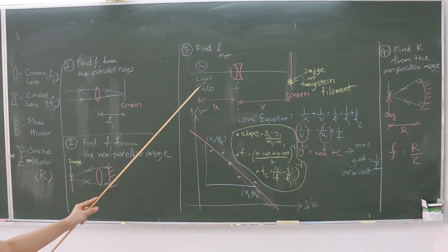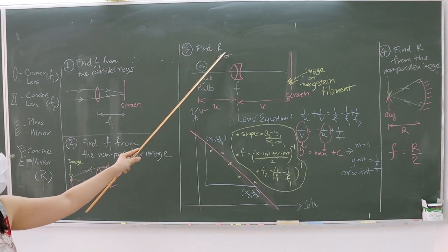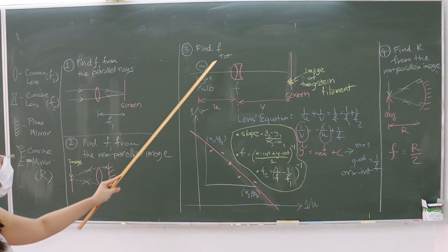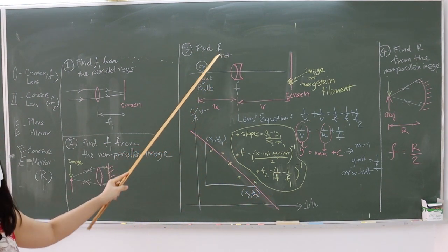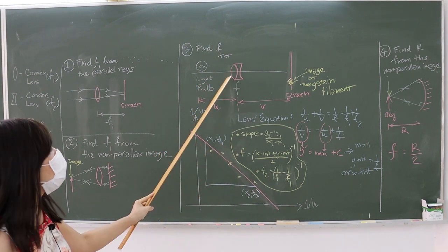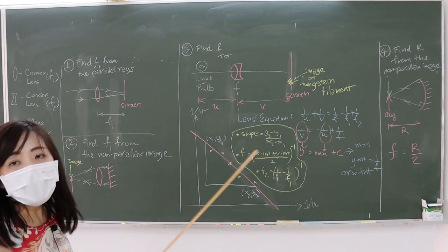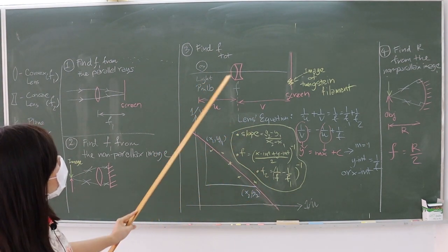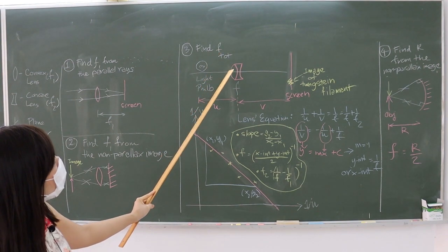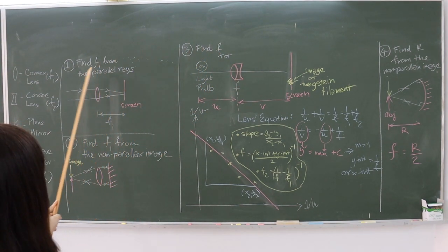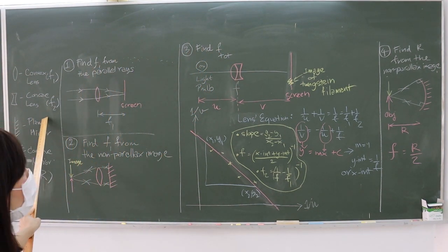In part 3 of the experiment, students are asked to find F total, which is the total focal length of the combined lenses. The combined lenses consist of the convex lens with focal length F1 attached with the concave lens with focal length F2.